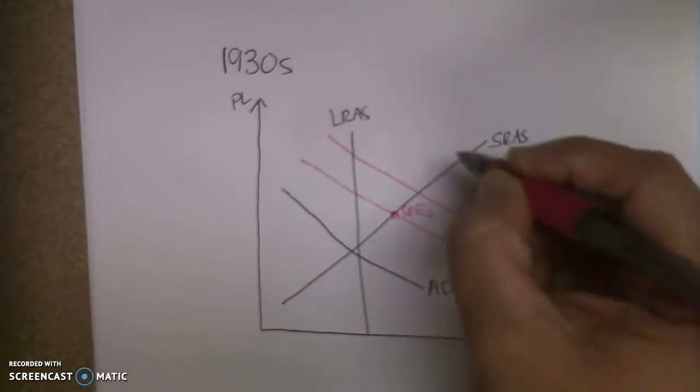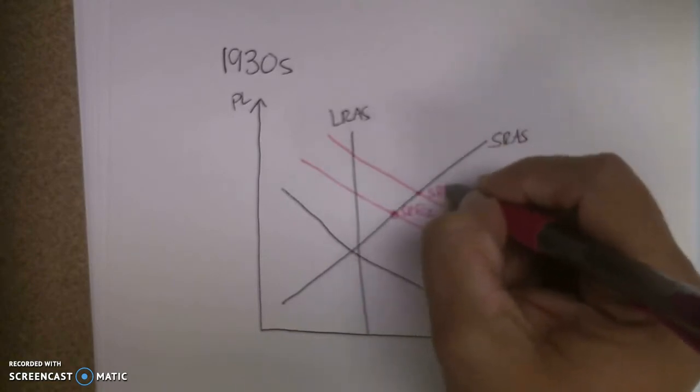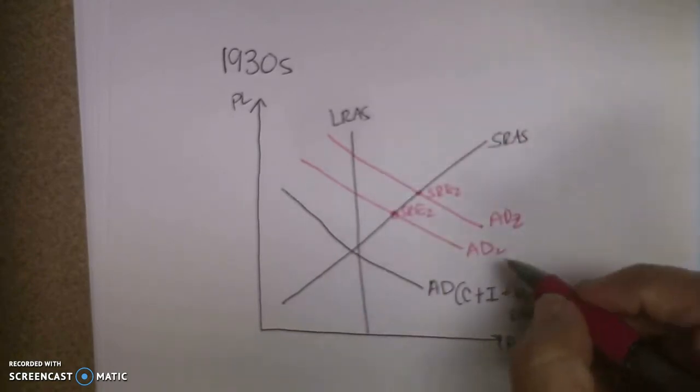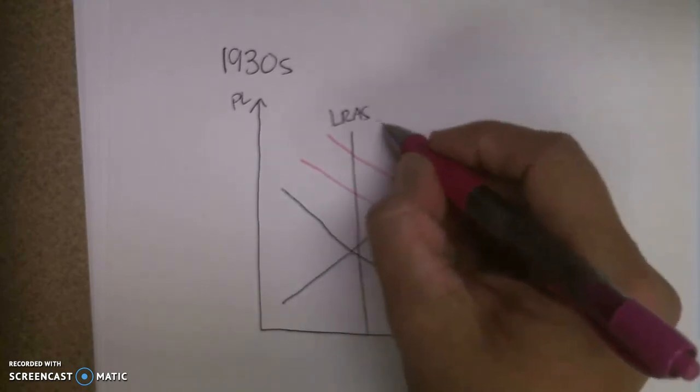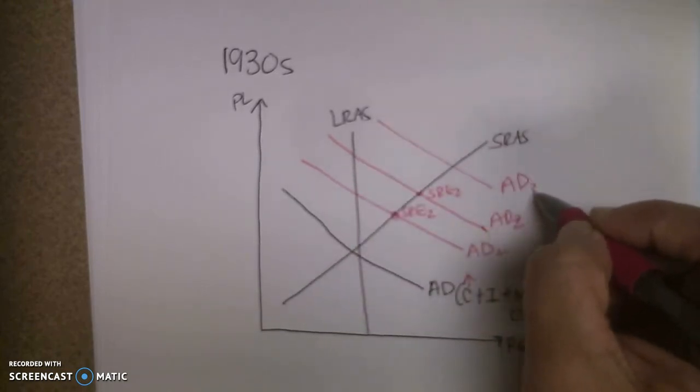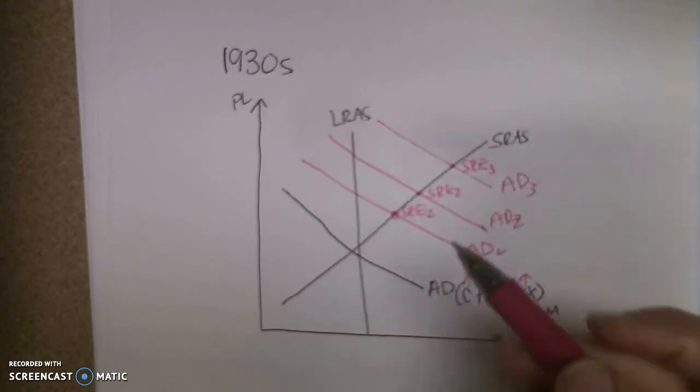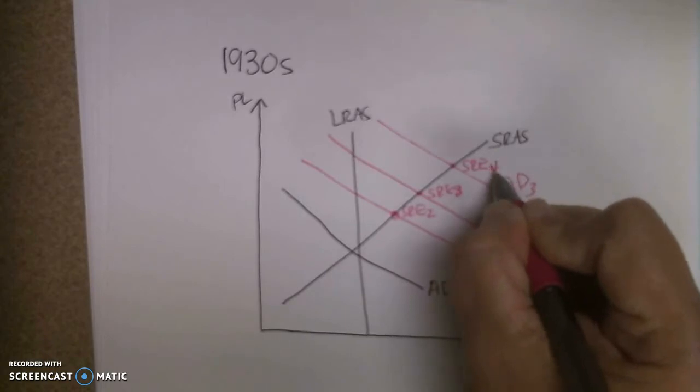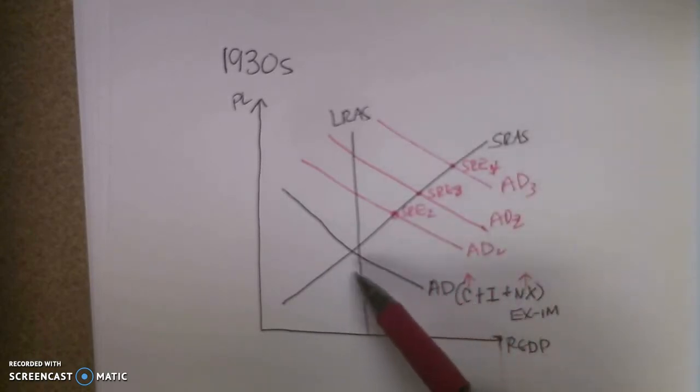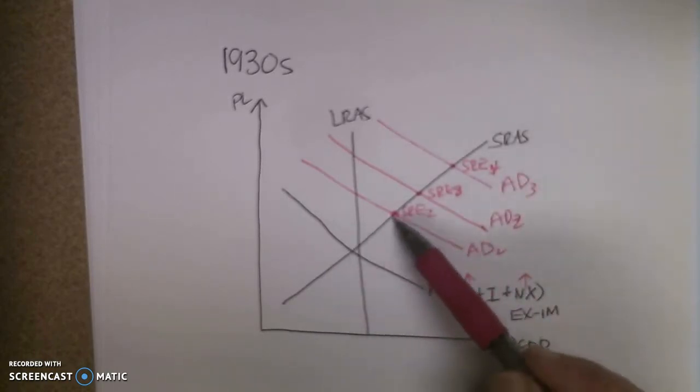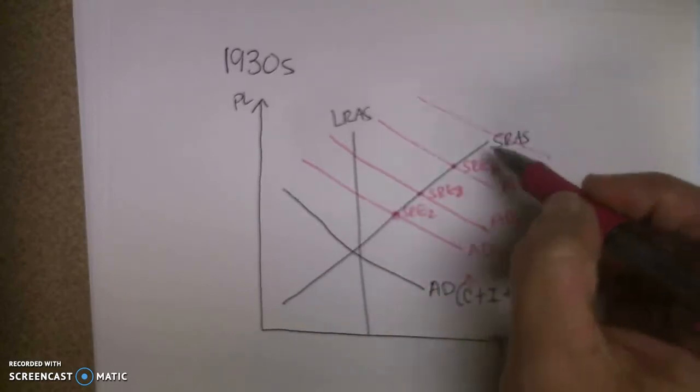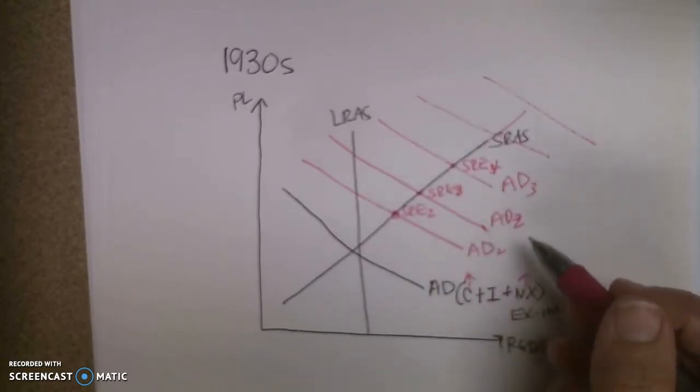And so, net exports went up. Well, as we are producing more and exporting more, consumption starts going up as well and produces the AD curve to move even more to short run equilibrium. Rather than our economy actually getting smaller, we move from a slight recessionary gap and we're moving farther and farther into an inflationary gap.